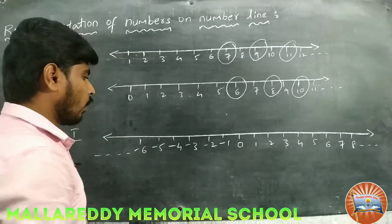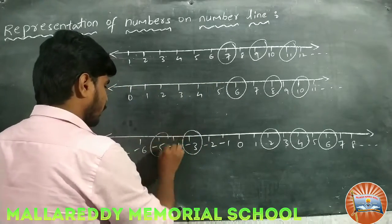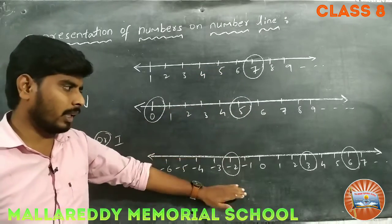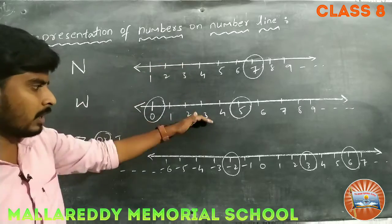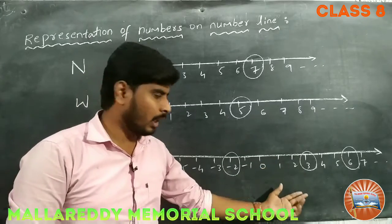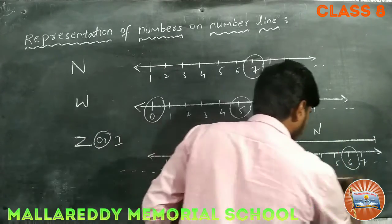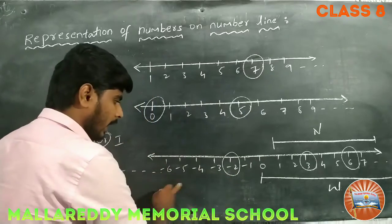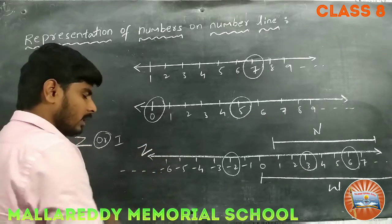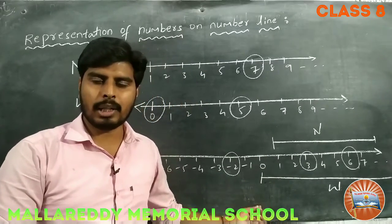Similarly, integers also — we can round up the numbers like this. So this is the way of representation of numbers: natural numbers, whole numbers, integers. Natural numbers and whole numbers are present in the integers also. So from here to here they are natural numbers, and from here to here they are whole numbers. These are the negative numbers which are included in the integers. Remember that concept.